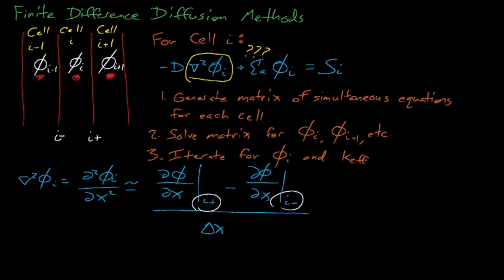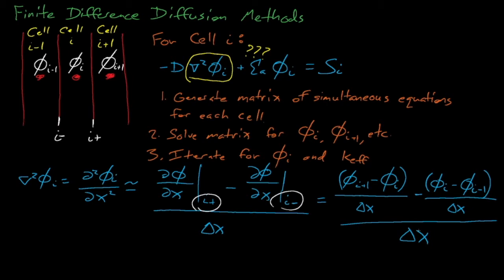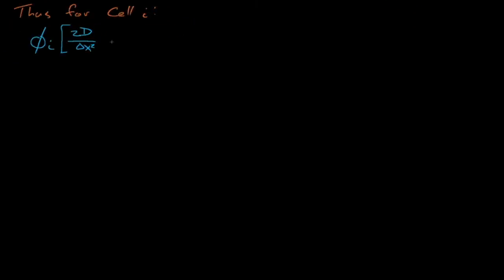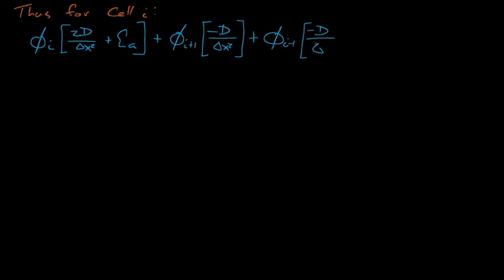The derivative of the flux is approximately equal to the flux in the next cell minus the flux in the previous cell, divided by delta x, the spacing between the cells. This means that at I-plus, the first derivative of the flux is approximately equal to phi of I plus 1 minus phi of I, all divided by delta x. At I-minus, the flux derivative is approximately equal to phi of I minus phi of I minus 1, divided by delta x. Once we simplify things, we find that our diffusion balance equation for cell I becomes an expression which depends on the fluxes in cells I, I-plus-1, and I-minus-1.